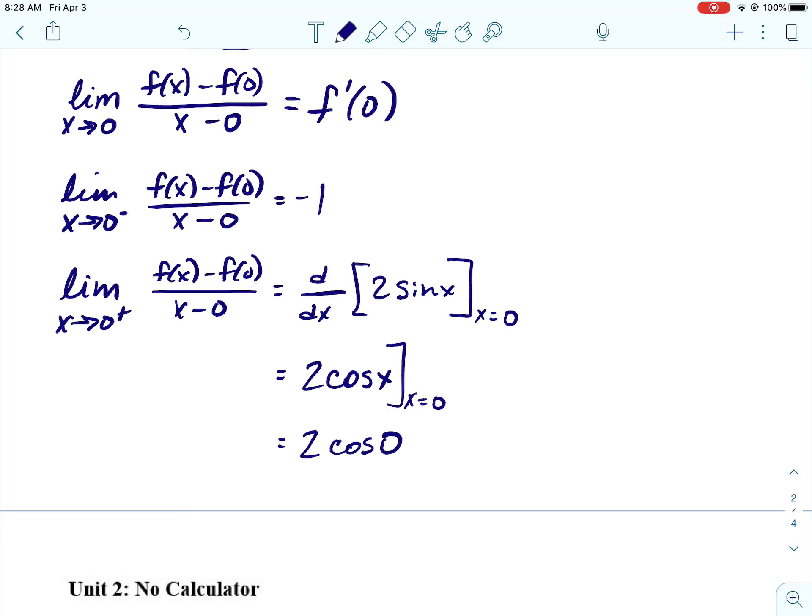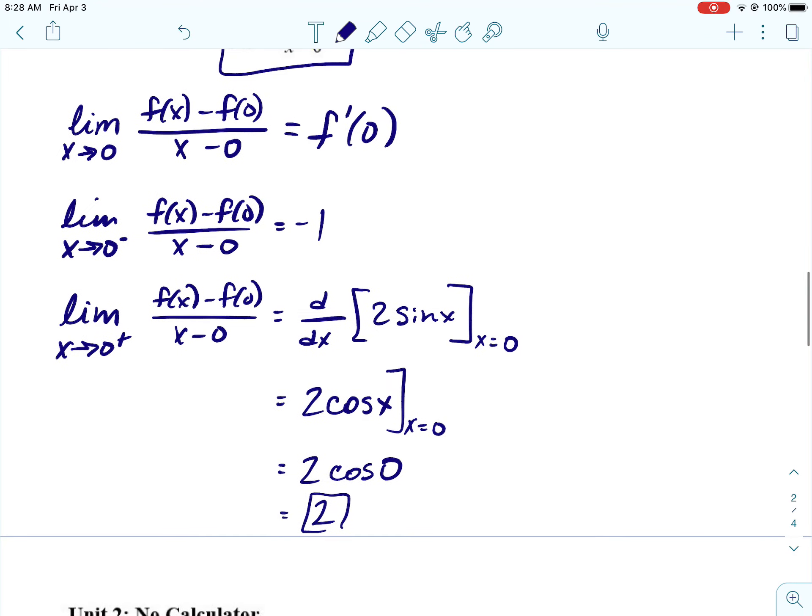So the derivative of 2 sine of X is 2 cosine of X. And then we want to plug in 0 for X. Alright. The cosine of 0 is 1. So that limit is 2.